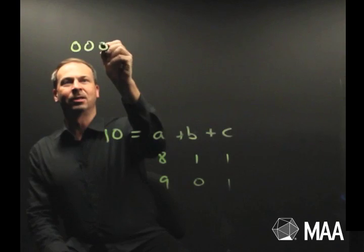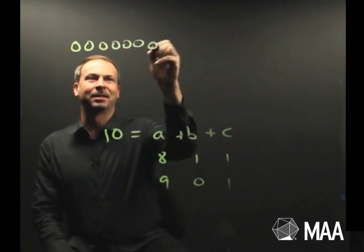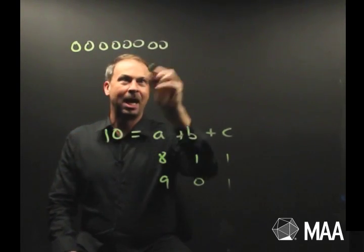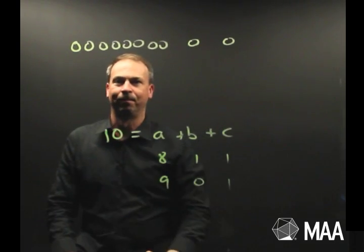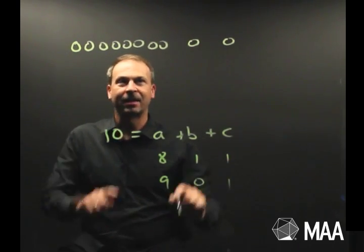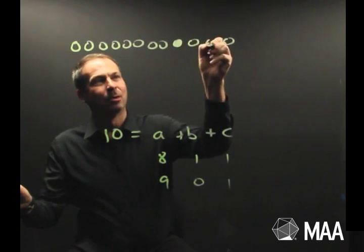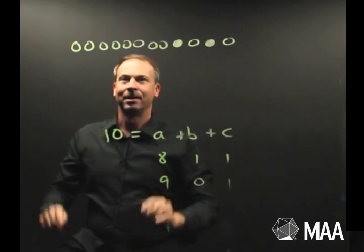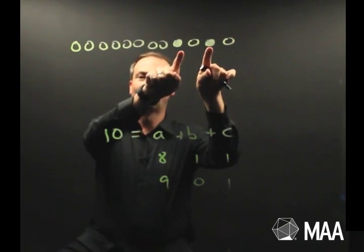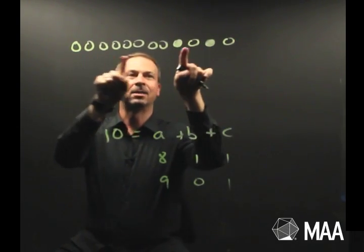In fact, I'll draw eight dots, the hard part's actually counting to eight, I think that's eight, and one dot and one dot. Bingo, there's that solution. In fact, notice I've got little spacers here. In fact, let me actually draw my spacers with solid dots. So there's actually 10 dots, two solid for the spacers, and 8, 1, 1.